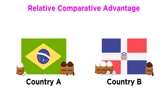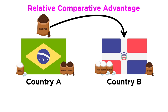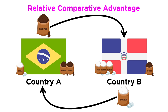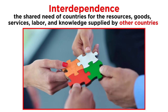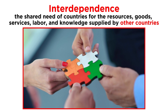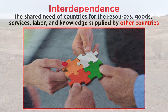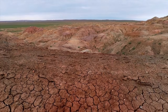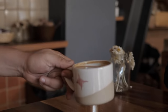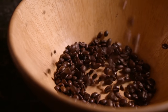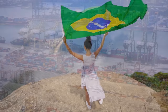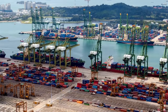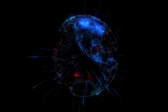So hypothetically, country A should be exporting coffee to country B, and country B should be exporting sugar to country A. What we have just demonstrated is an economic concept known as interdependence. Interdependence is the shared need of countries for the resources, goods, services, labor, and knowledge supplied by other countries. Because of interdependence, a drought in Guatemala that diminishes their coffee crop might mean more expensive coffee the next time you visit your favorite artisanal coffee shop. Perhaps this shop would turn to another country that produces coffee, like Brazil, to get its coffee beans in order to avoid raising prices. In any case, this is just one example of interdependence, which illustrates how many of the economies in the world are intimately connected.